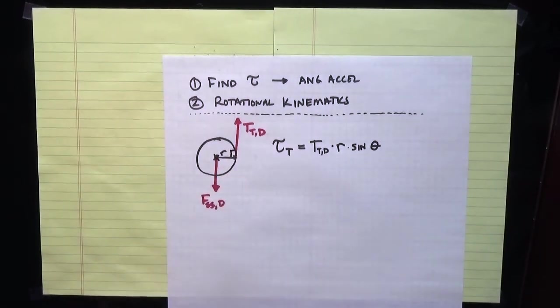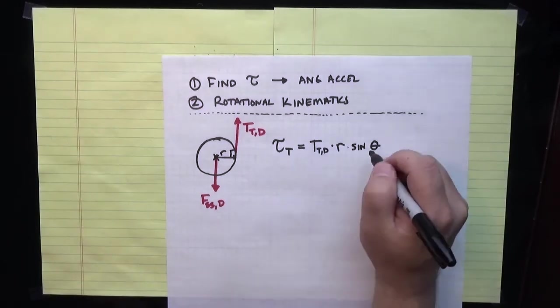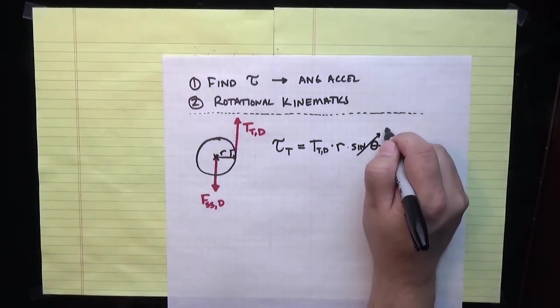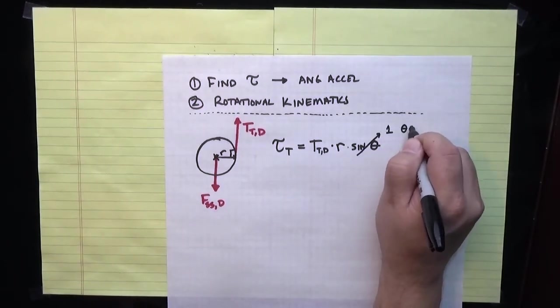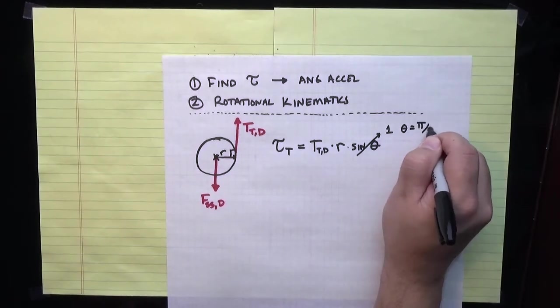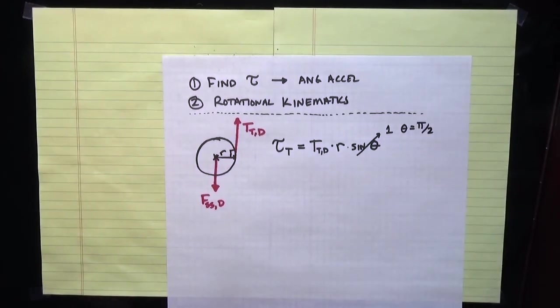In this case, as is often the case in problems that we've been looking at, that angle is 90 degrees. So this is equal to 1, because theta is 90 degrees.